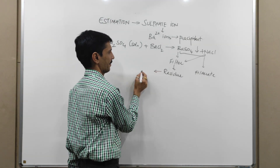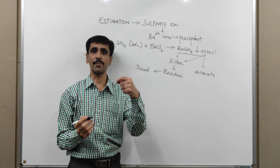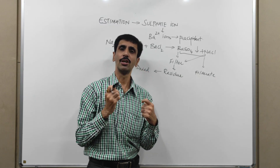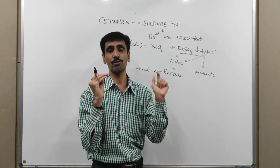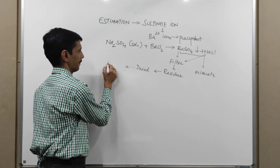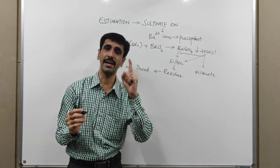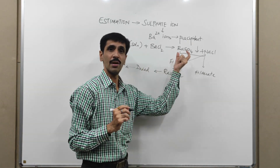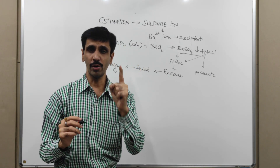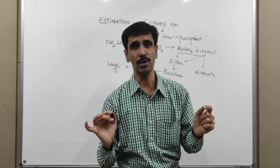This residue is then dried — or we can also say ignited, if it has higher thermal stability. The most important perspective of drying is to remove water molecules without affecting the weight of the BaSO4. We are going to dry it and then weigh it. Gravimetric estimation is an estimation based on weight, so depending upon the weight of the residue, we are in a position to estimate the sulfate ions present in the given sodium sulfate solution.